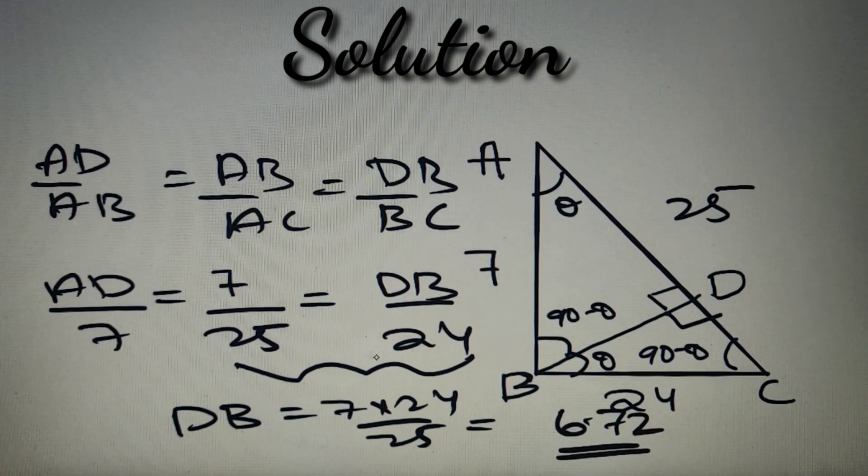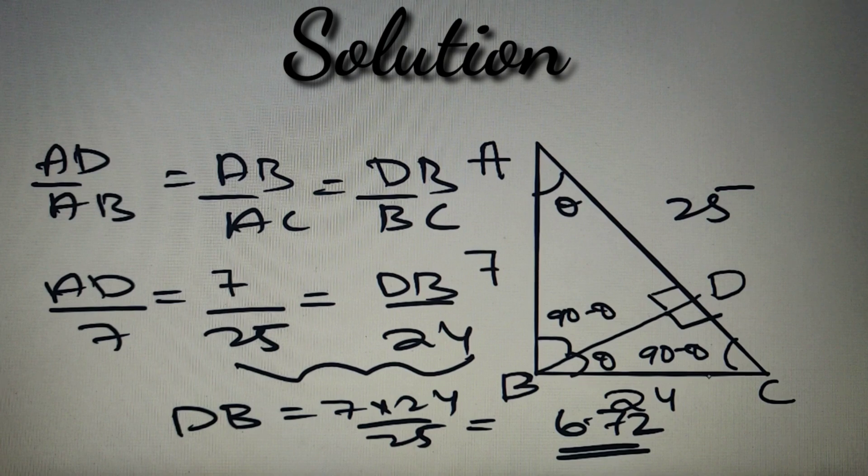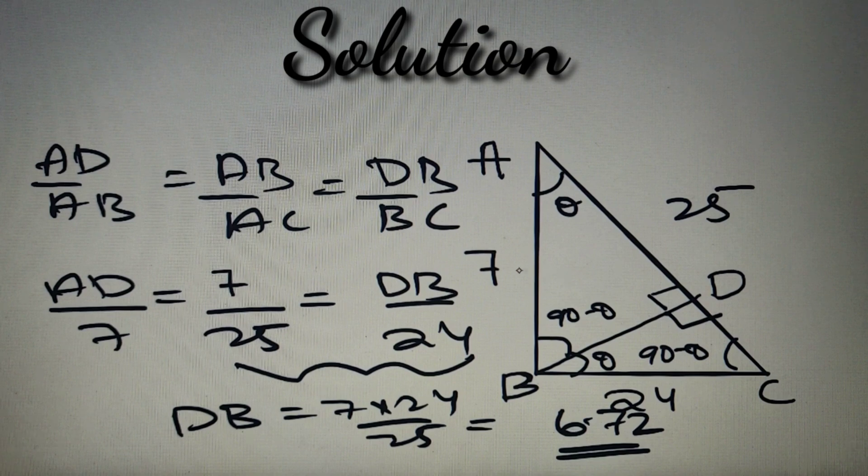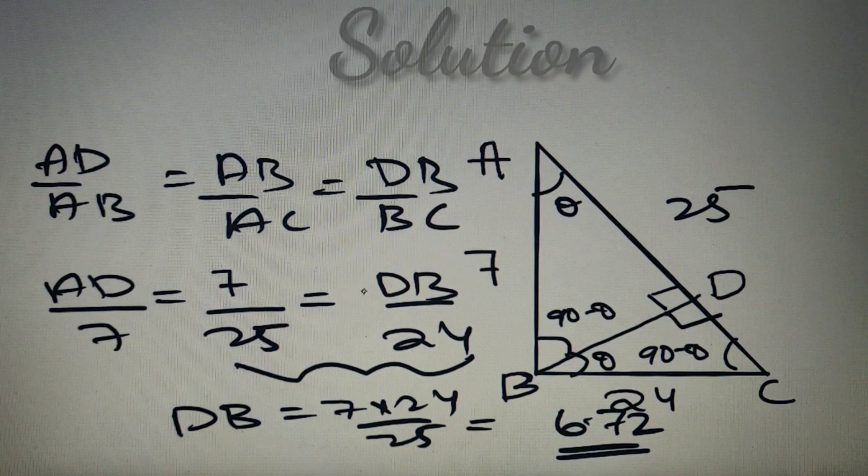The length of side BD is equal to option number B, 6.72. Now we have got a solution by using the longer method. Let's check the shortcut method for solving this problem.